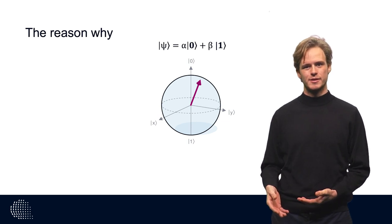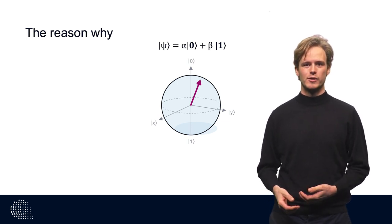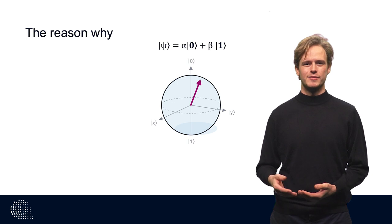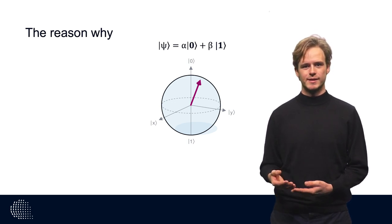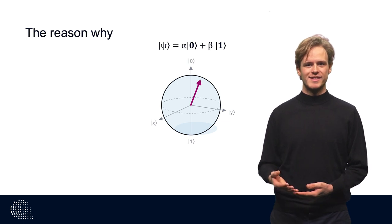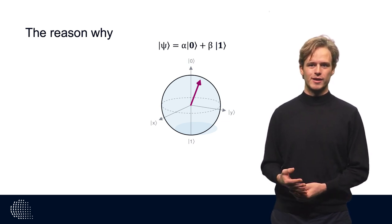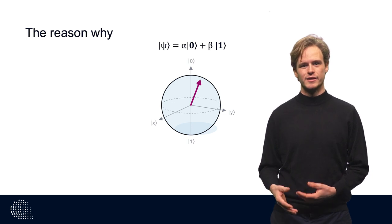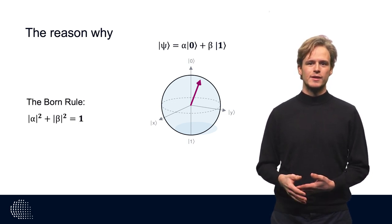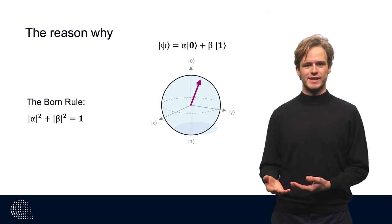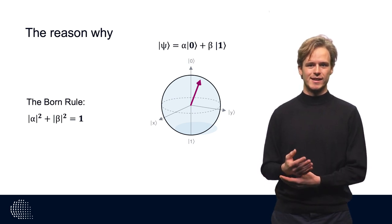So psi is alpha 0 plus beta 1, where the coefficients alpha and beta define the probability that the state is in the 0 or in the 1 state. The coefficients satisfy the rule that the absolute value of alpha plus the absolute value of beta should be 1, because of the total probability rule.